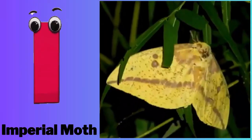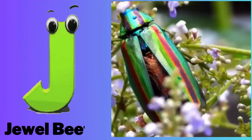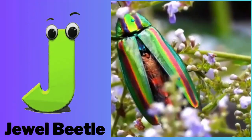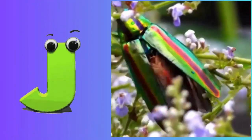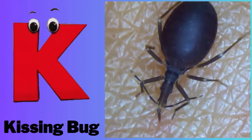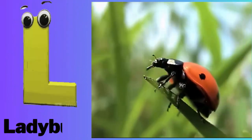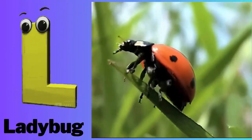I - I for imperial moth. J - J for jewel beetle. K - K for kissing bug. L - L for ladybug.